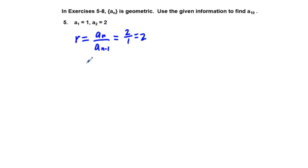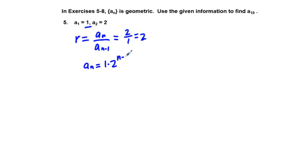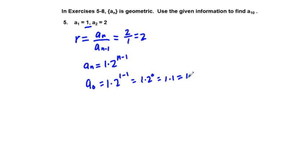We'll write the explicit version: a sub n equals a sub 1 times 2 to the power of n minus 1. We can check this: a sub 1 equals 1 times 2 to the power of 1 minus 1, which equals 1 times 2 to the power of 0, which equals 1 times 1, which equals 1. That checks out.